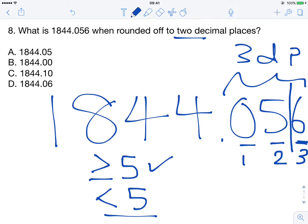But since it's greater than 5, which has nothing to do with this 5 here, we're going to round up. So the answer will be 1844.06, as opposed to remaining 1844.05. So the answer is D.